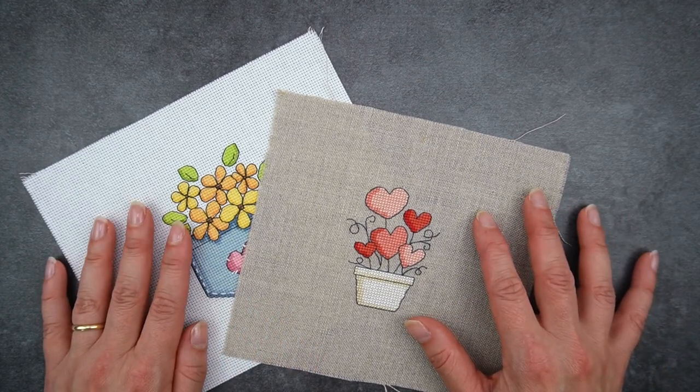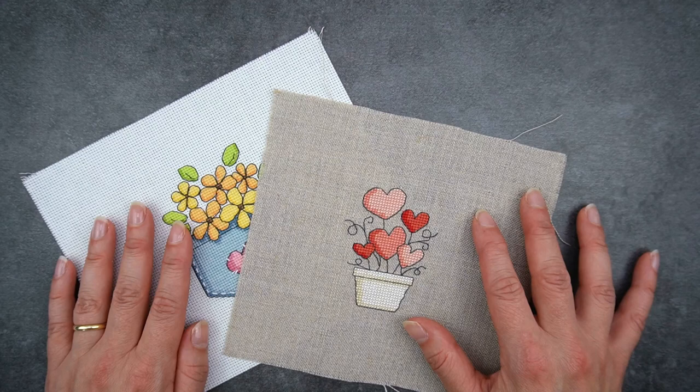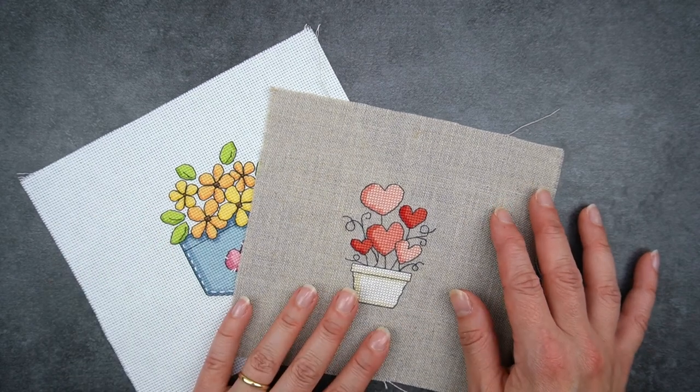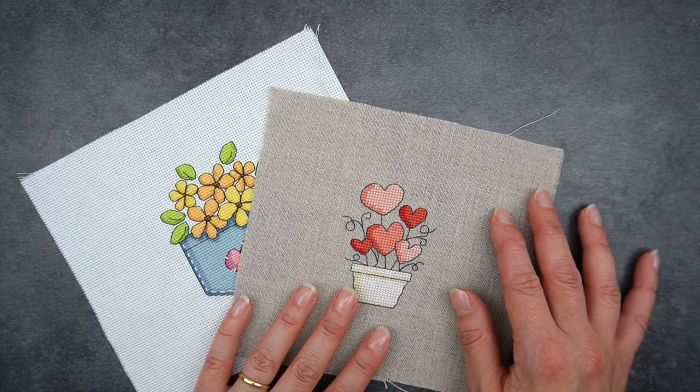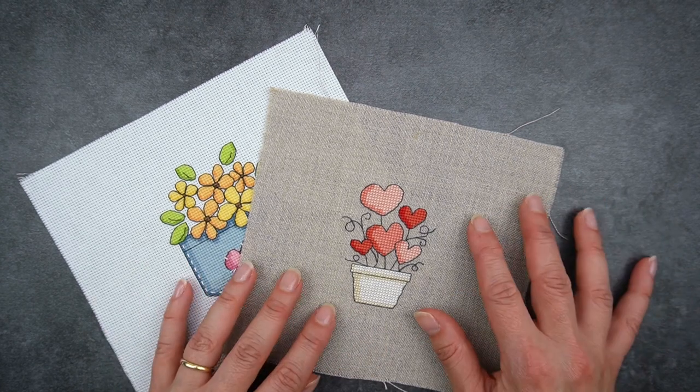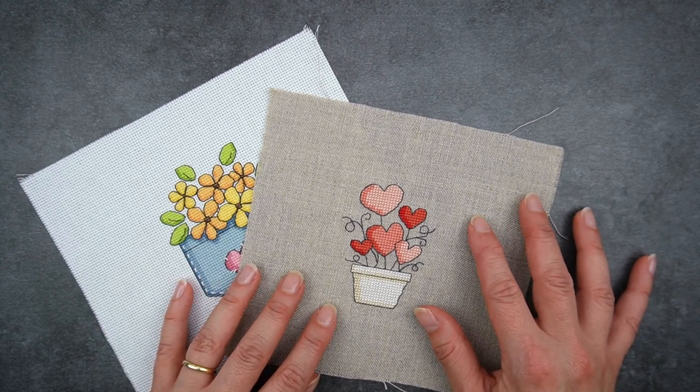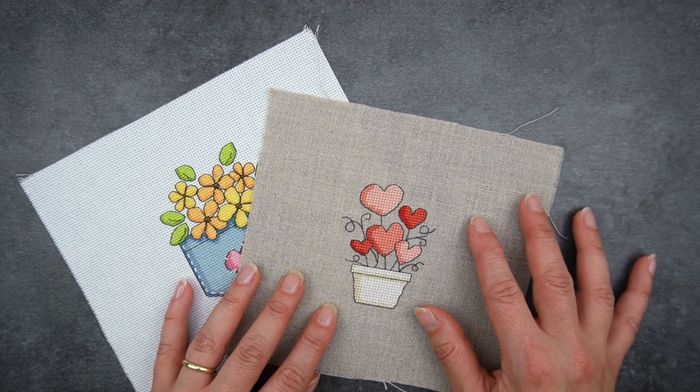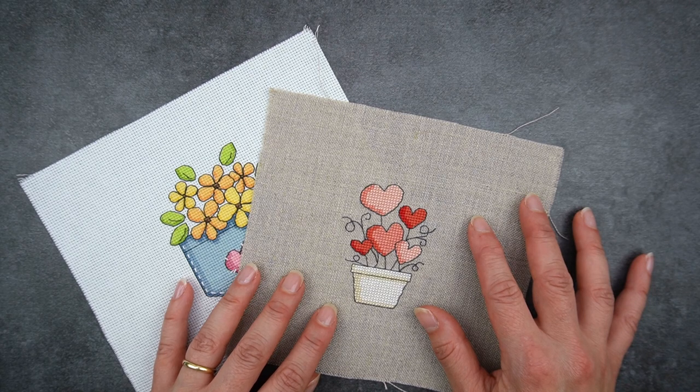So for small projects on Aida I often don't do anything special to stop the edge fraying but I'm way more likely to do it for linen because it drives me kind of crazy. Now if you're looking for ways to stop your fabric edges fraying then take a look at my video with five methods you can try and I'll link that in a card and in the description.